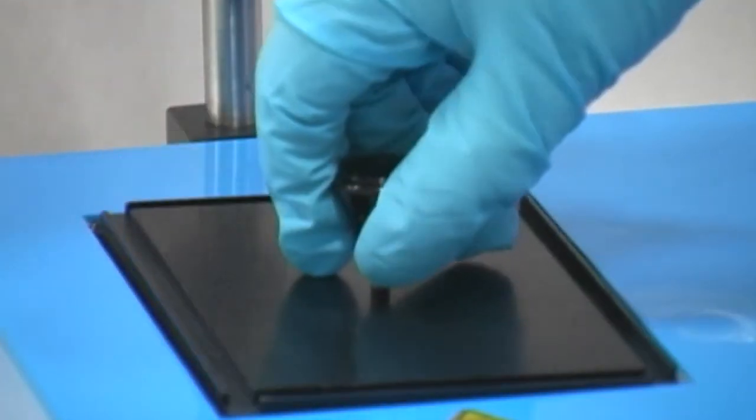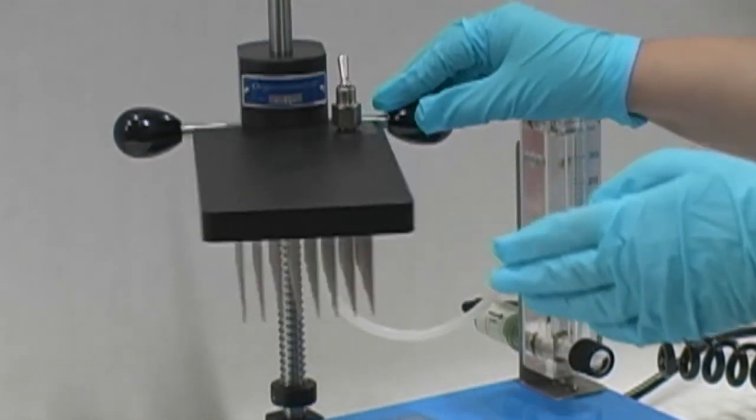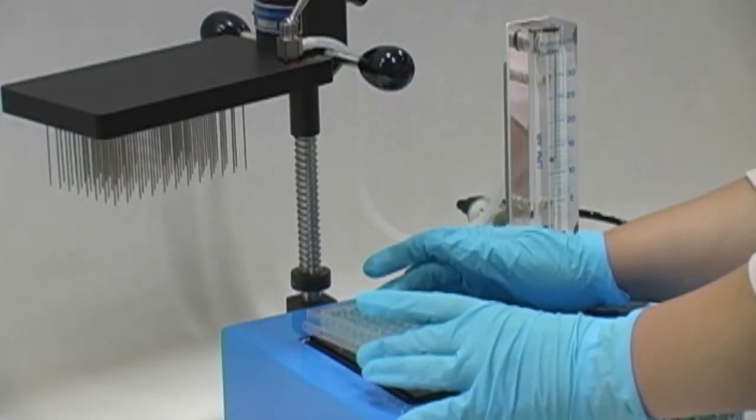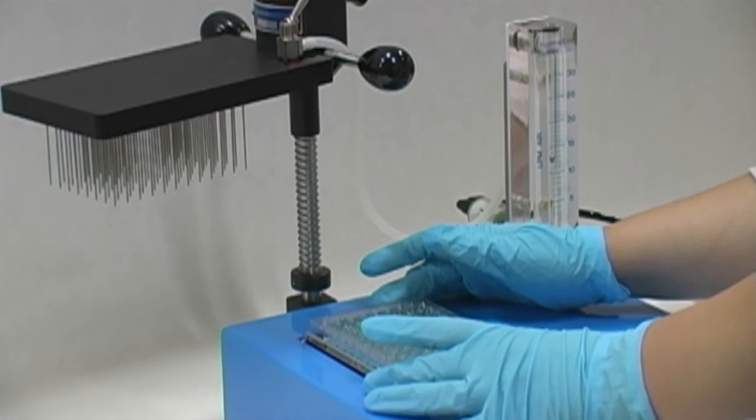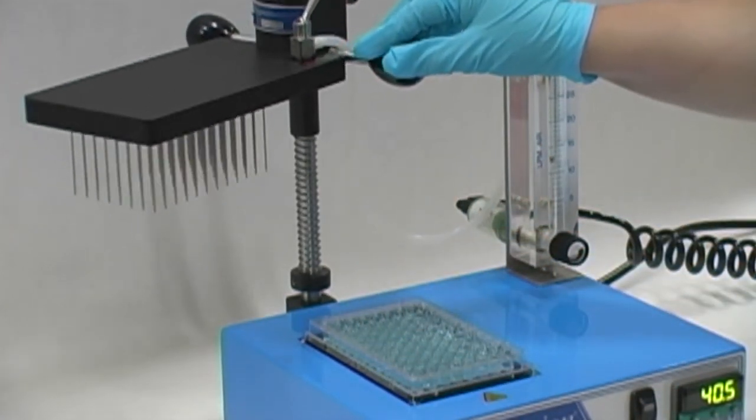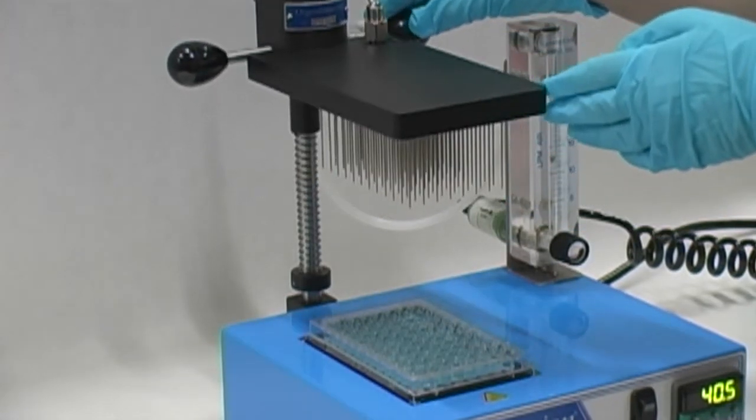Preheat the heat block. Swing the manifold away. Place the microplate or sample tubes in the heat block. Re-center the manifold above the samples. An audible sound will indicate that the manifold is positioned in the alignment groove of the rod.